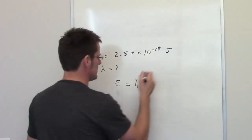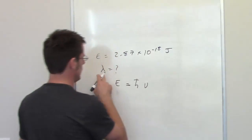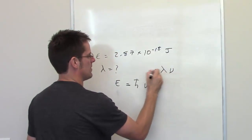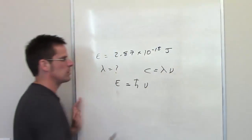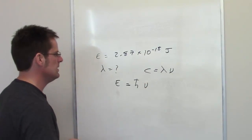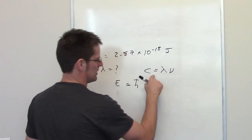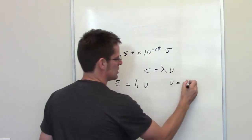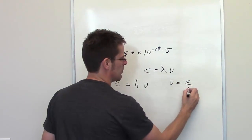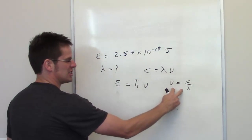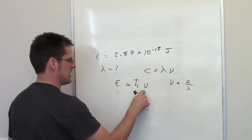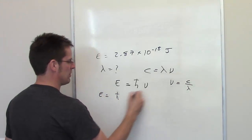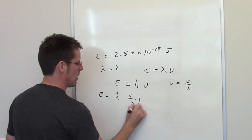You have to remember that there is a way of interrelating wavelength and frequency: wavelength times frequency equals the speed of light. You can rearrange this equation algebraically to show that frequency is equal to the speed of light divided by wavelength, and then substitute that in for frequency.